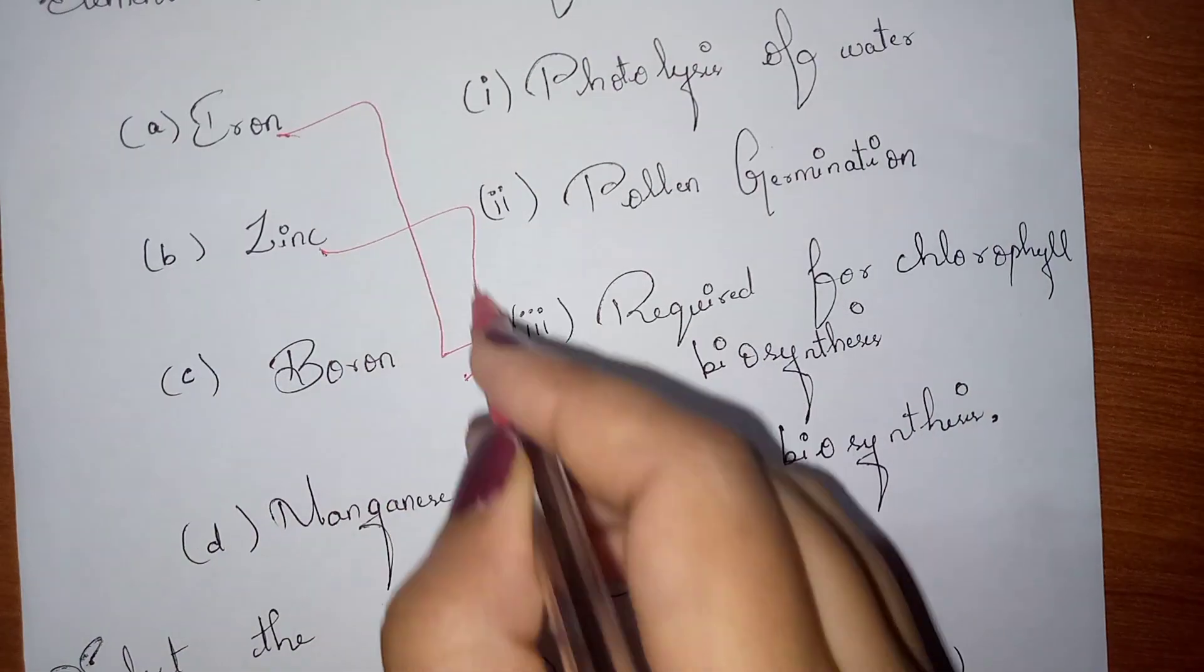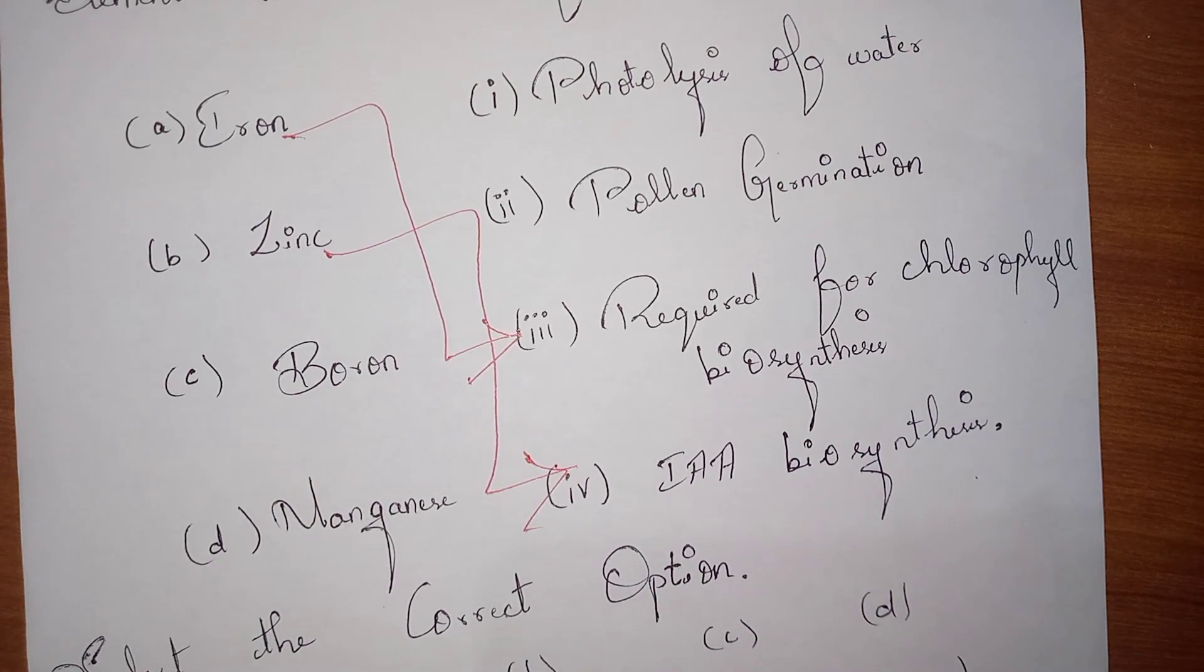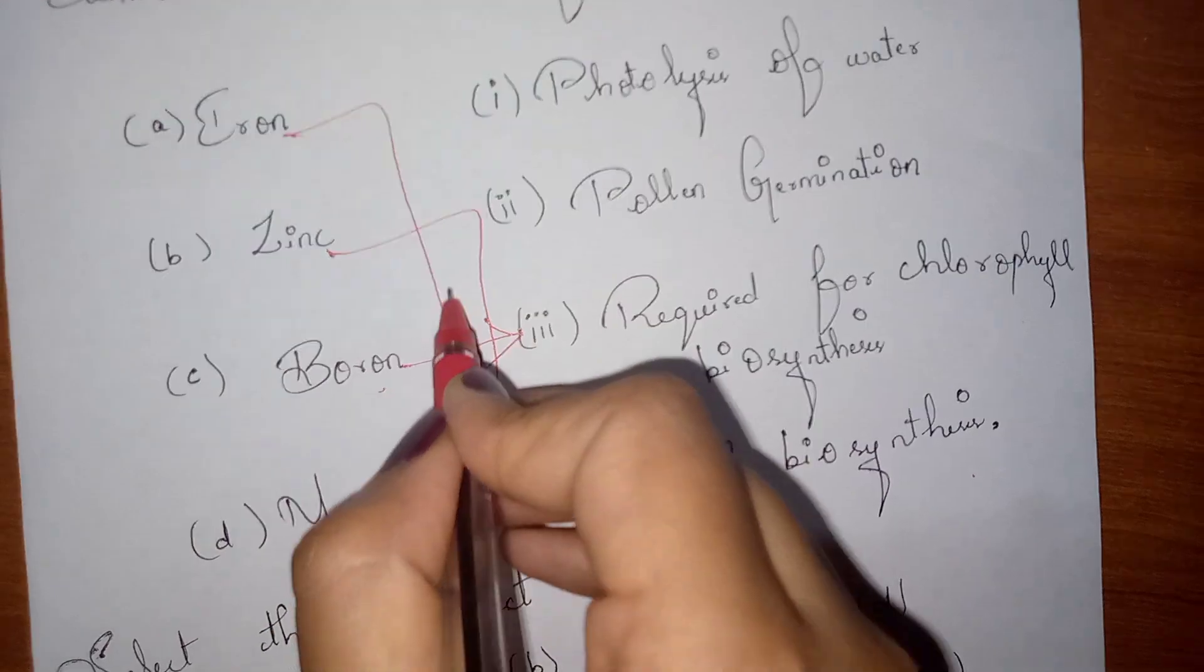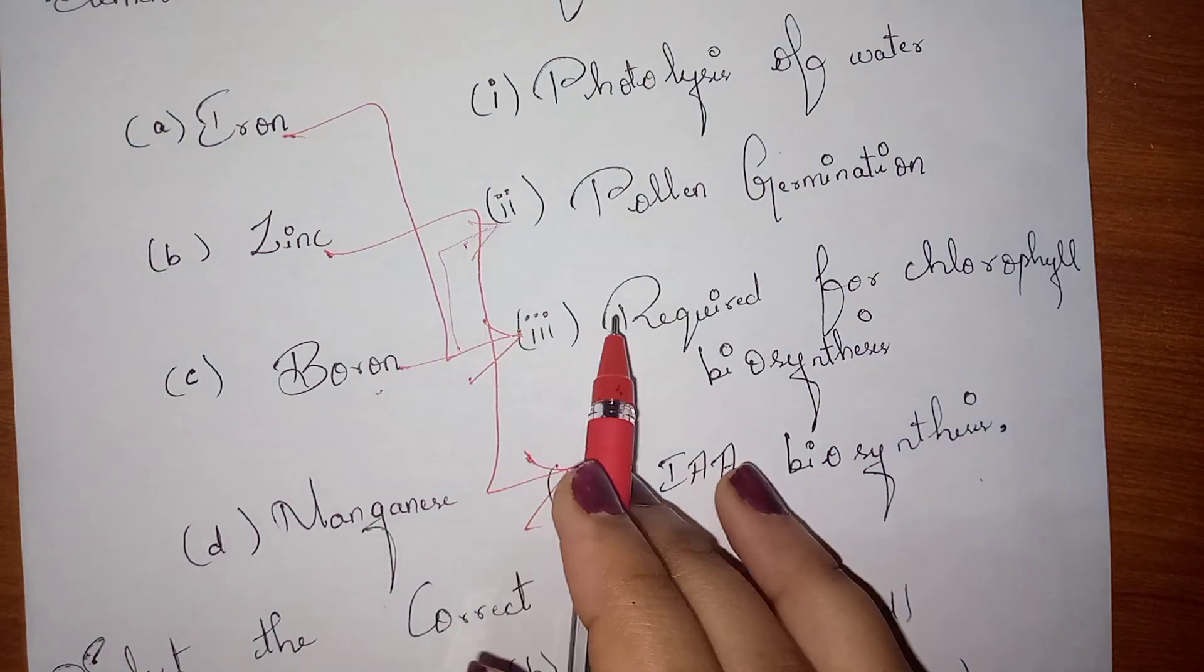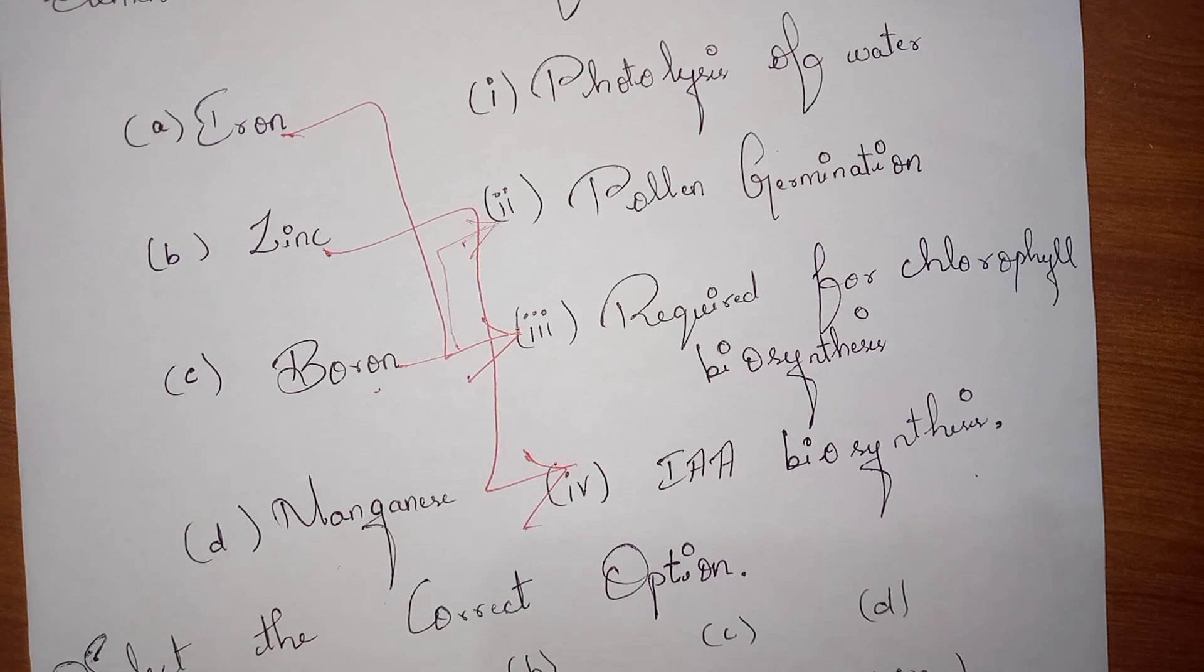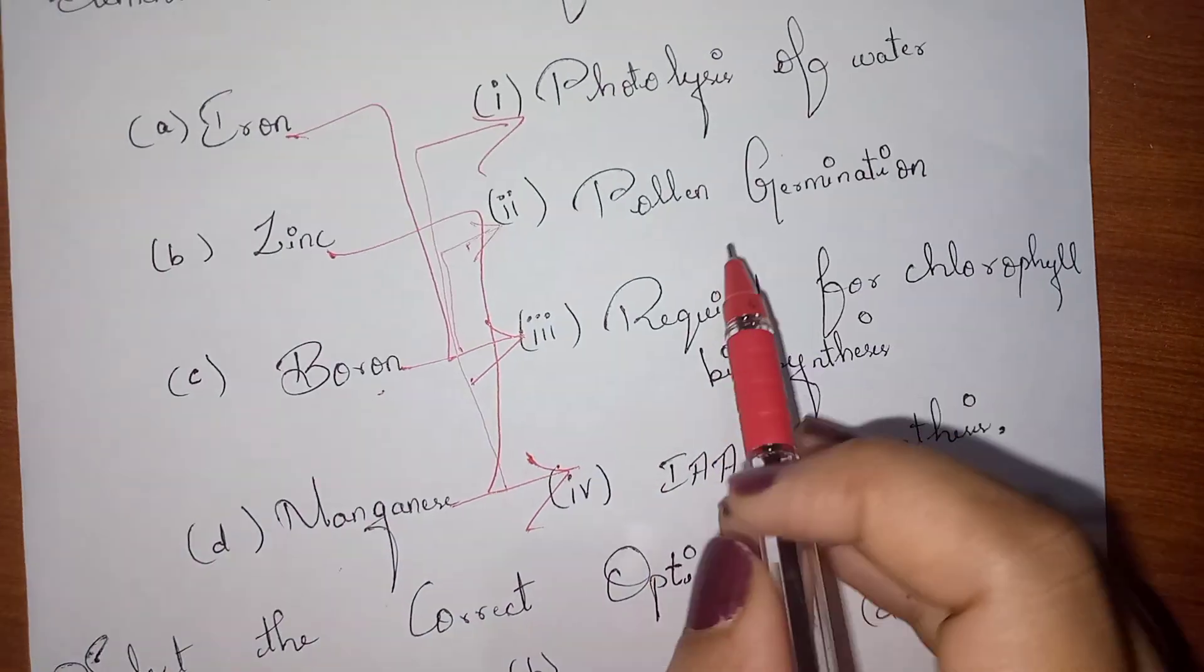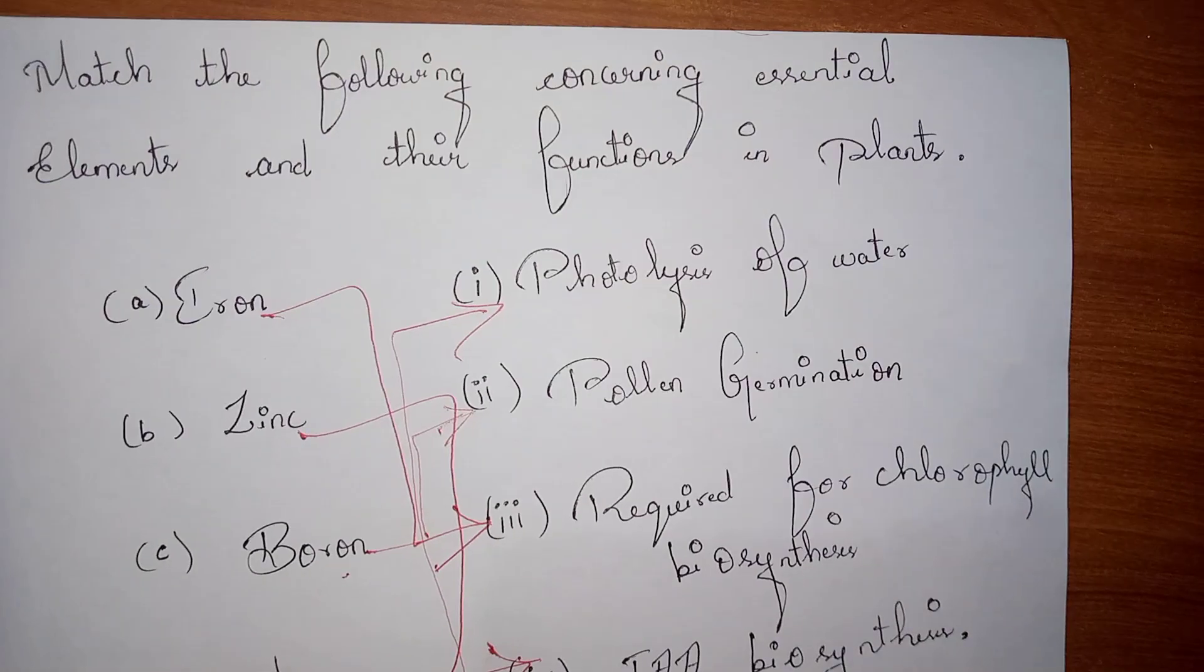And for Boron, it will help in pollen germination in the plants. And last one is Manganese. This Manganese will help in photolysis of the water. This is how you can do the match the following easily.